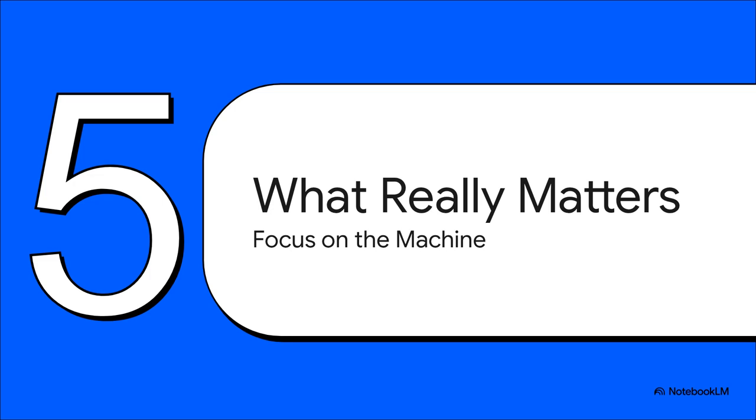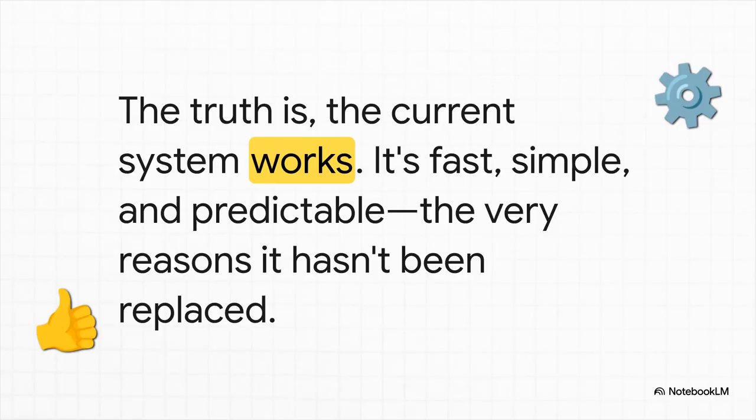We've been through the chaos, the dream of a perfect system, the organizers and the Zen Masters. What's the actual takeaway? It all comes down to the shared annoyance — the one thing that connects every single person in the Proxmox community. Whether you're a neat freak with your numbering scheme or a Zen Master who's let it all go, you've felt this pain. You are not alone. And let's be honest: for all our complaining, the current system works. The reason it's still around is because it's incredibly fast, it's simple, and it's predictable. And for a huge number of users running smaller setups, that's more than good enough.